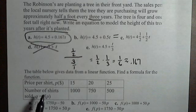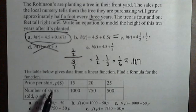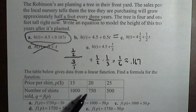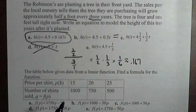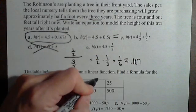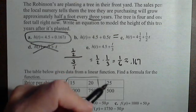Alright, the function below is linear. Find a formula for the function. We have the price and the number of shirts sold. So first thing we wanna do is we wanna find the average rate of change. We can choose any two points, so maybe I choose these two.